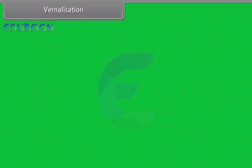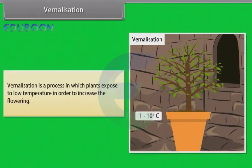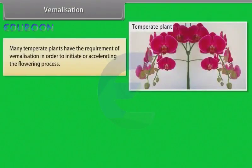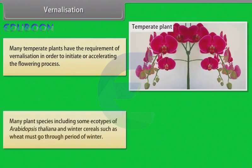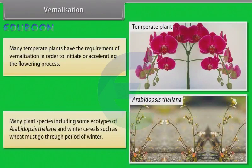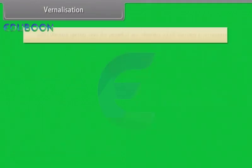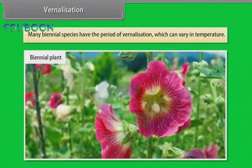Vernalization is a process in which plants are exposed to low temperature in order to increase flowering. Many temperate plants have the requirement of vernalization in order to initiate or accelerate the flowering process. Many plant species, including some ecotypes of Arabidopsis thaliana and winter cereals such as wheat, must go through a period of winter. Many biennial species have a period of vernalization which can vary in temperature.